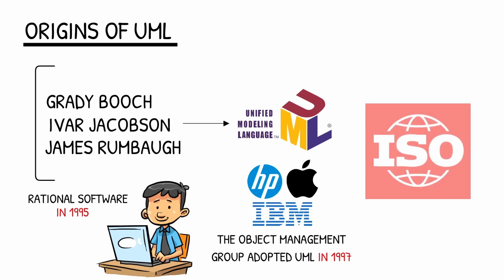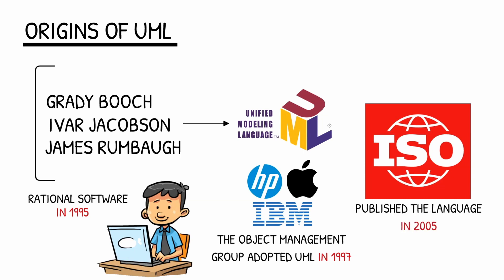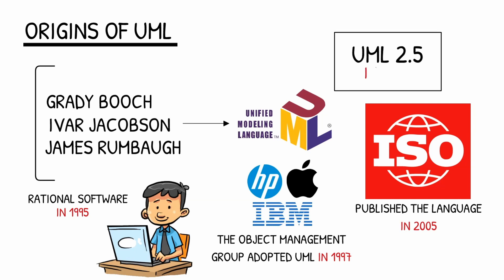The International Organization for Standardization, ISO, published the language in 2005, and it has since been revised and reviewed to keep it up to date. UML 2.5, the most recent version, was released in 2015.